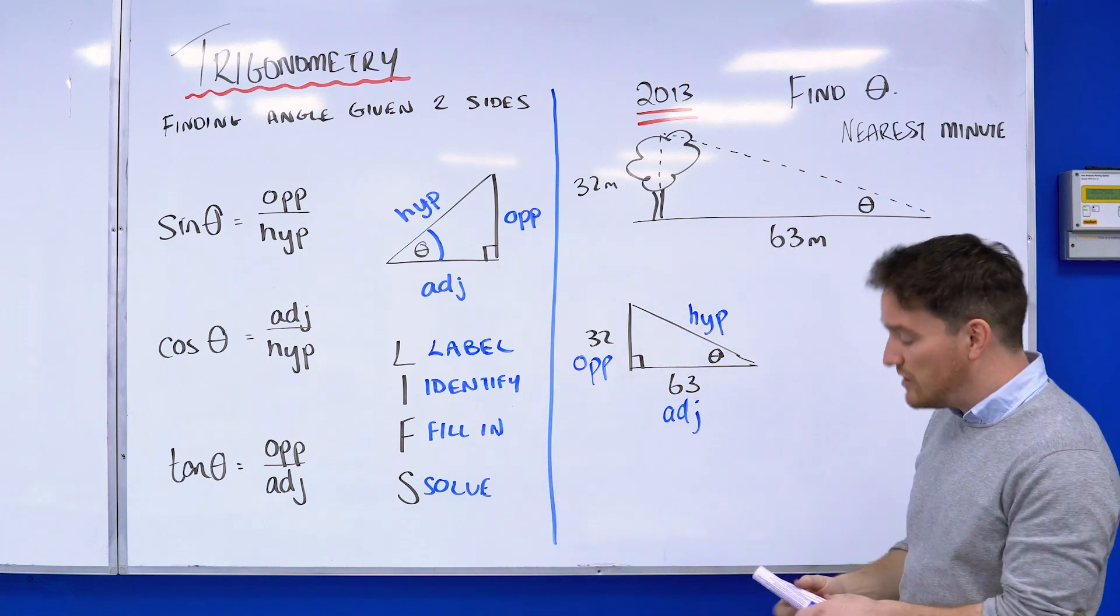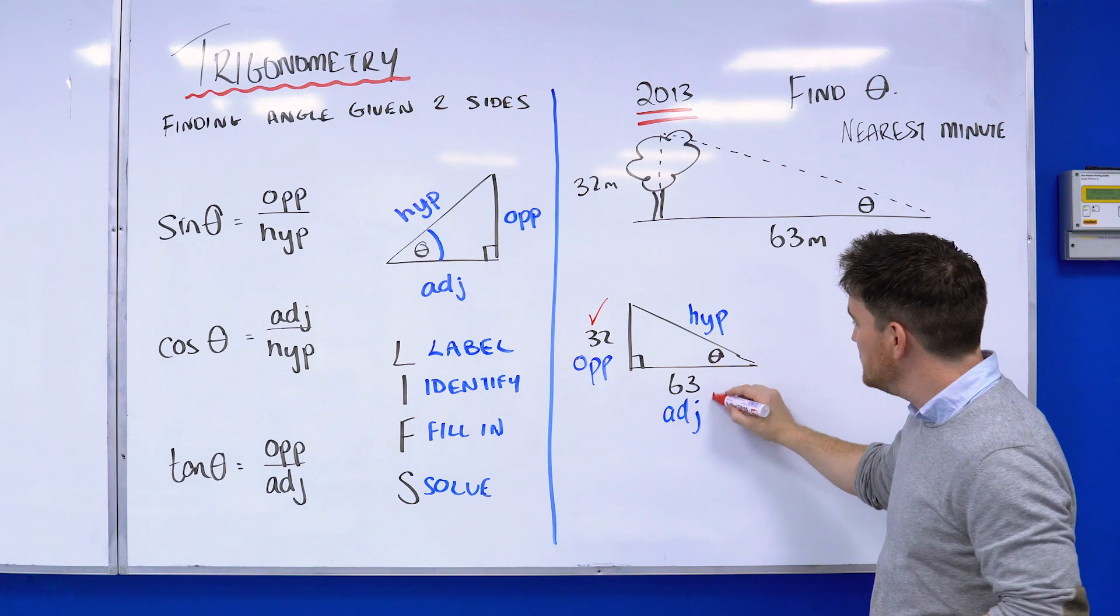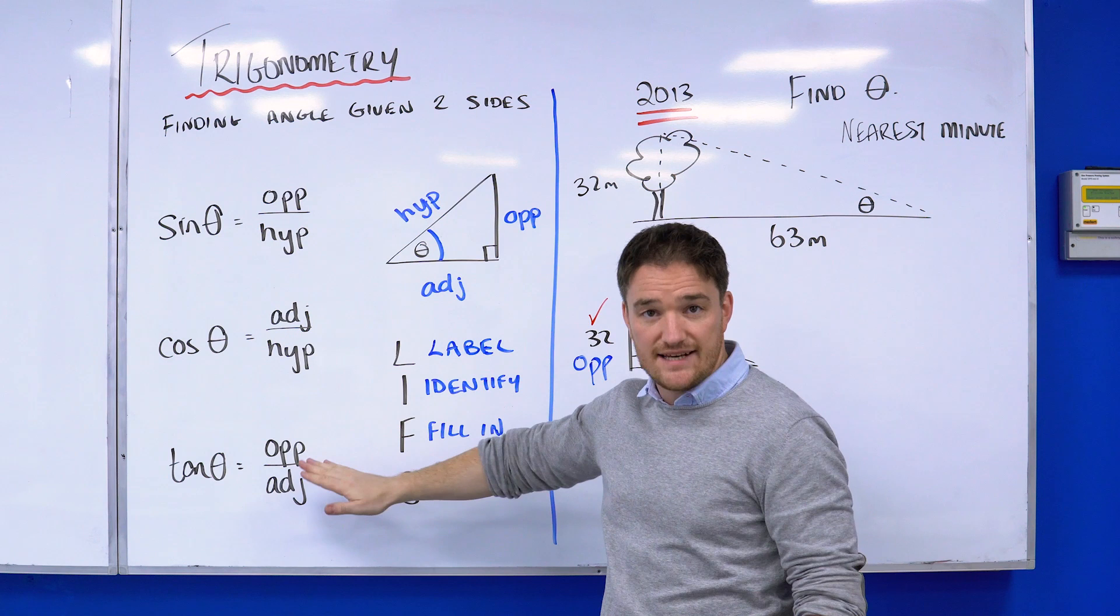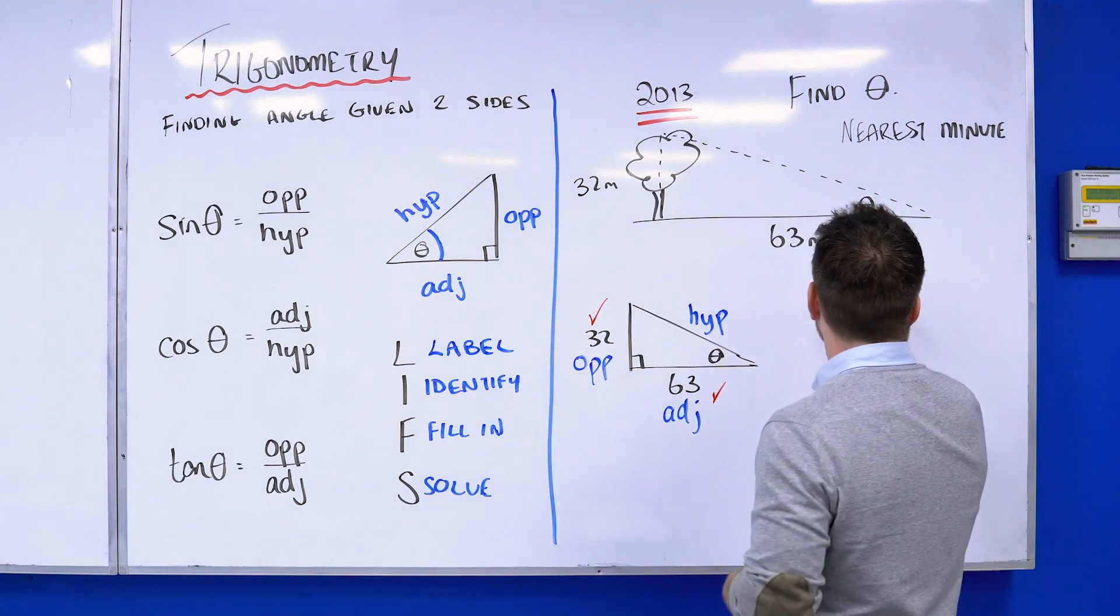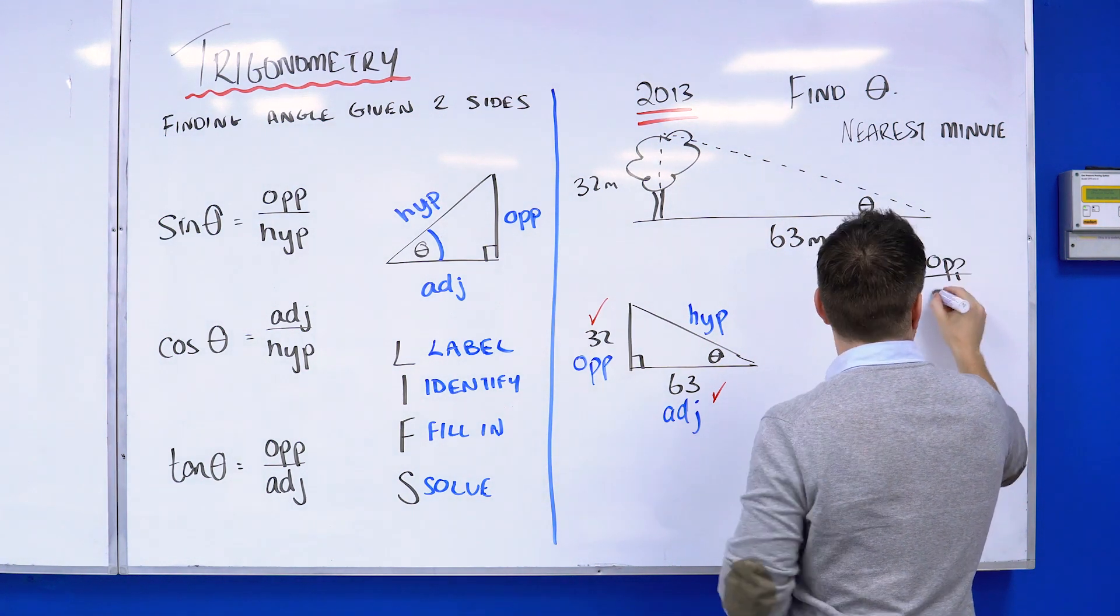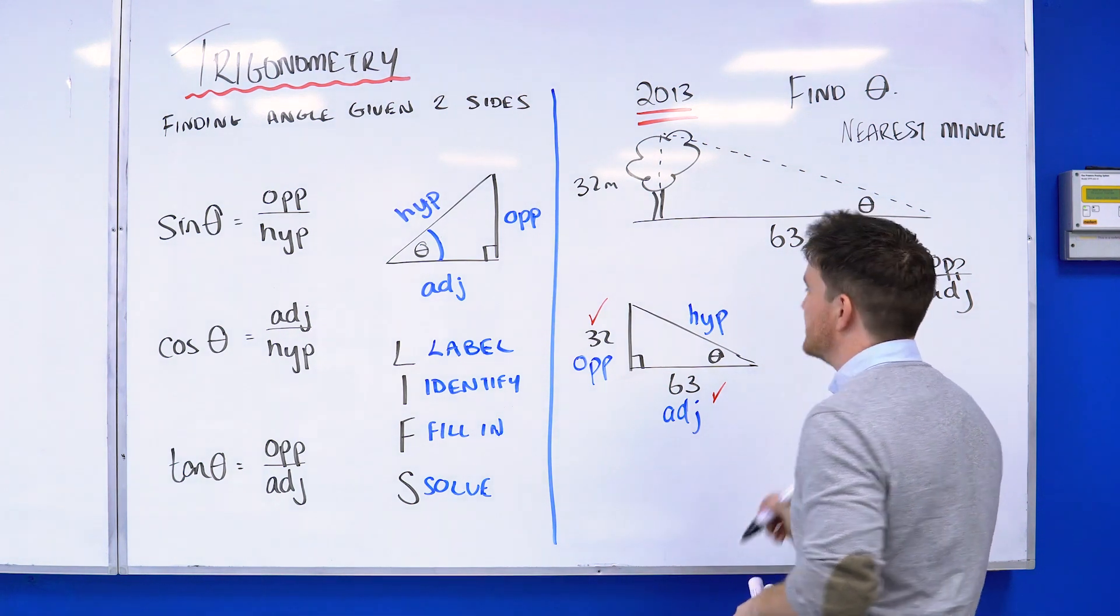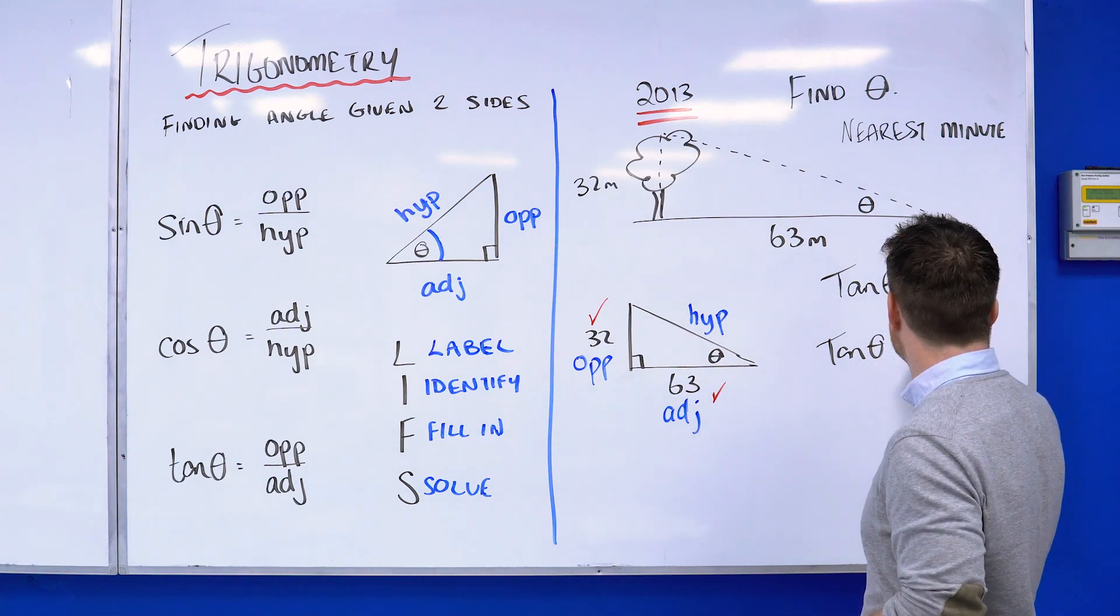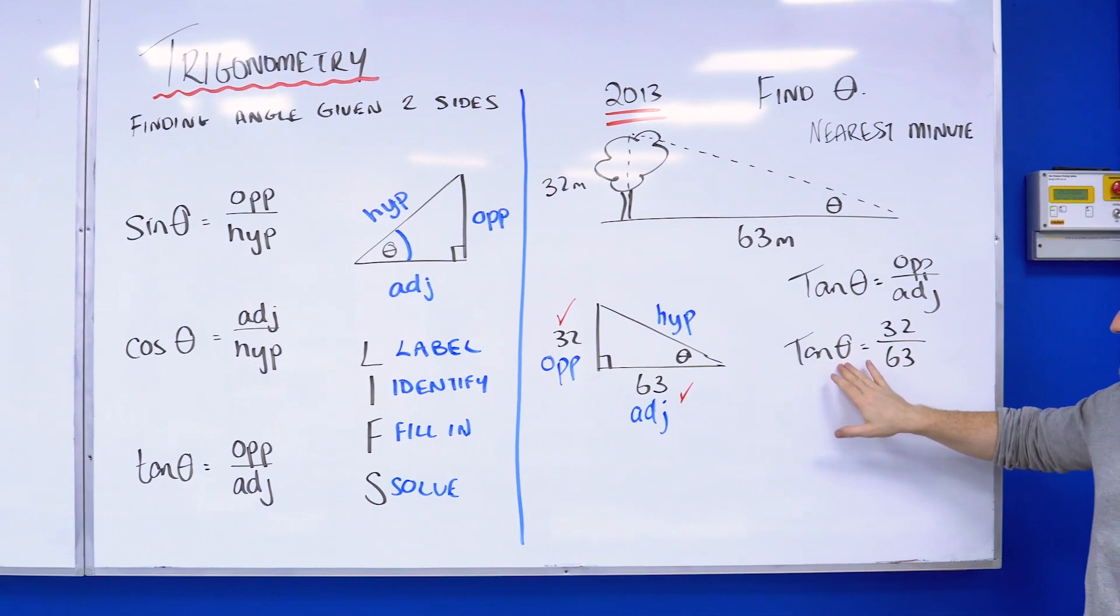I'm going to identify which equation. Have a look at what information you have: you have the opposite, you have the adjacent—which rule uses opposite and adjacent? Hey presto, it's tan! For the examiner, write the rule: tan(θ) equals opposite over adjacent. Now we're going to fill it in, so my opposite is 32 and my adjacent is 63.